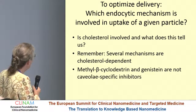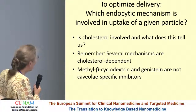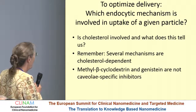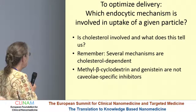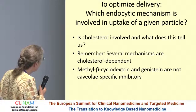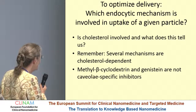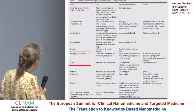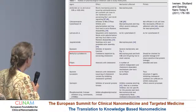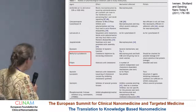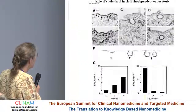To optimize delivery, the common question is which endocytic mechanism is involved in uptake of a given particle. A common question asked is whether cholesterol is involved, and one has to remember that several mechanisms are cholesterol dependent. For instance, if you add cyclodextrin to extract cholesterol, or genistein to check whether you affect uptake, one should remember these are not caveoli-specific inhibitors. To help clarify this, we published a toolbox of pharmacological inhibitors to study endocytosis. You see cyclodextrin, which extracts cholesterol, and filipin, which binds to cholesterol.